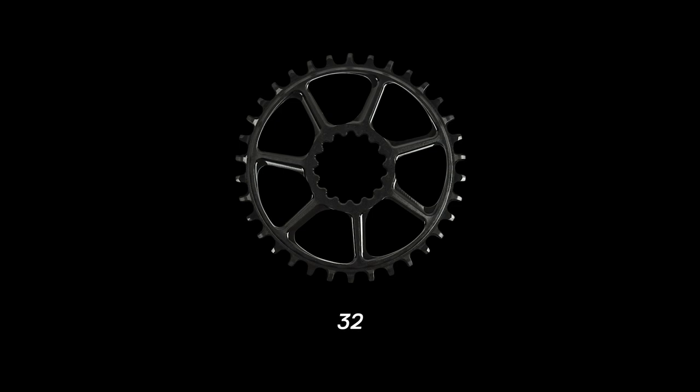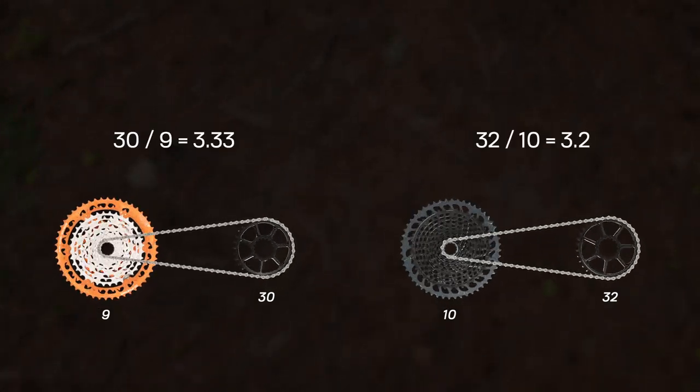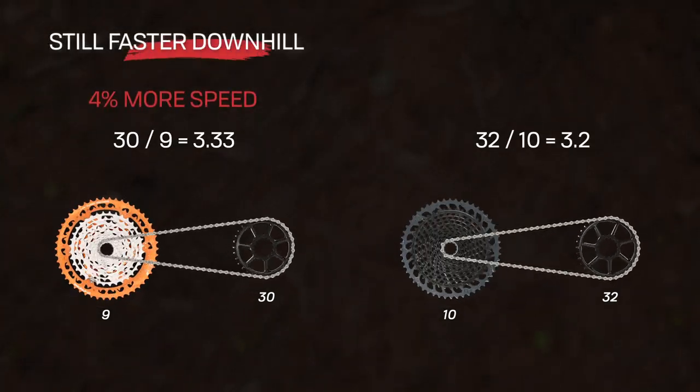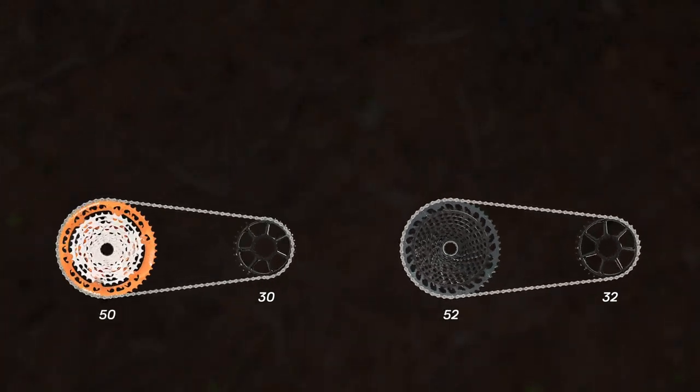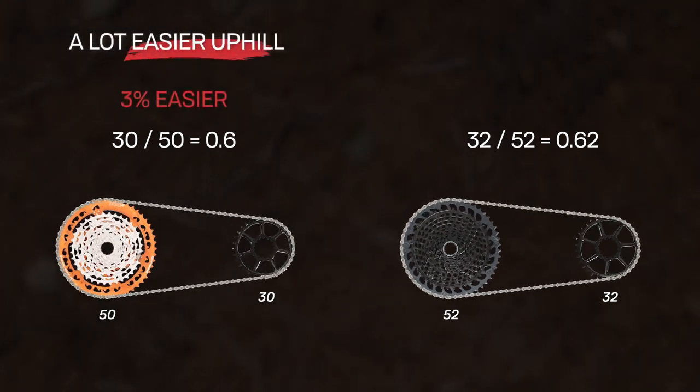Now we can drop a chainring size. Let's say from 32 to 30. 30 by 9 gives you a 4% power advantage over a 32 by 10, and 30 by 50 is now 3% easier to turn than 32 by 52.